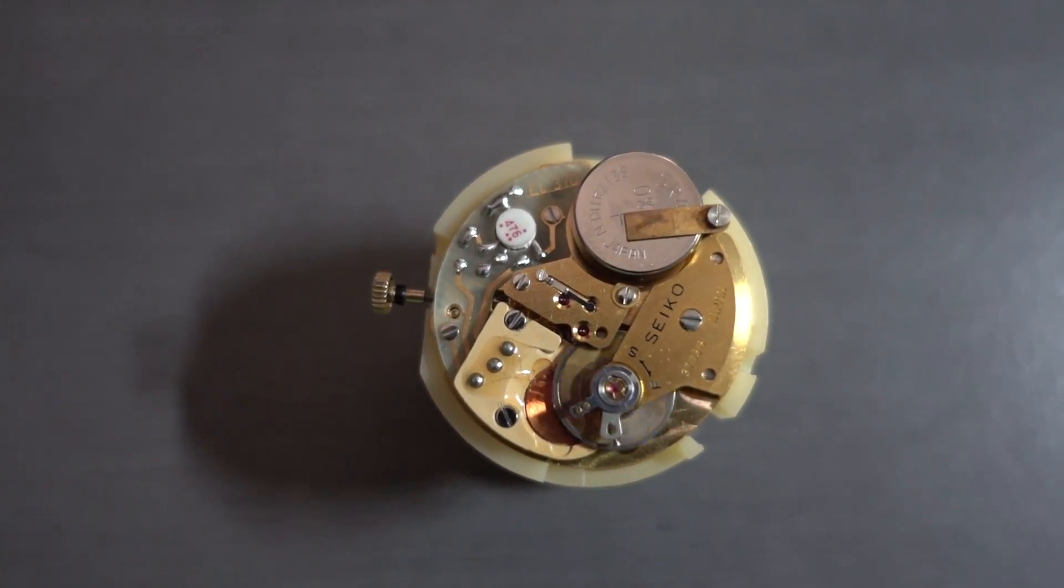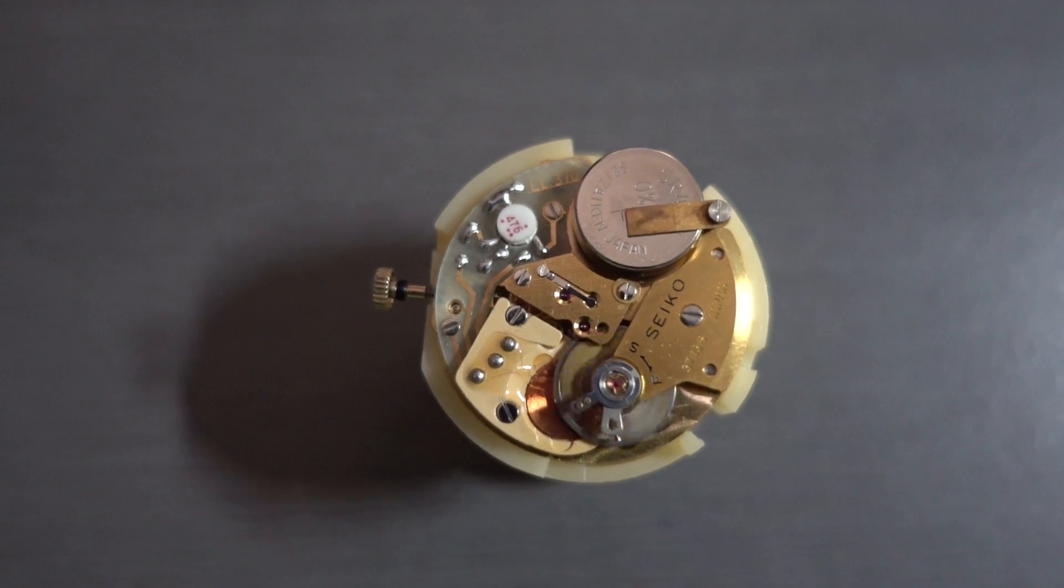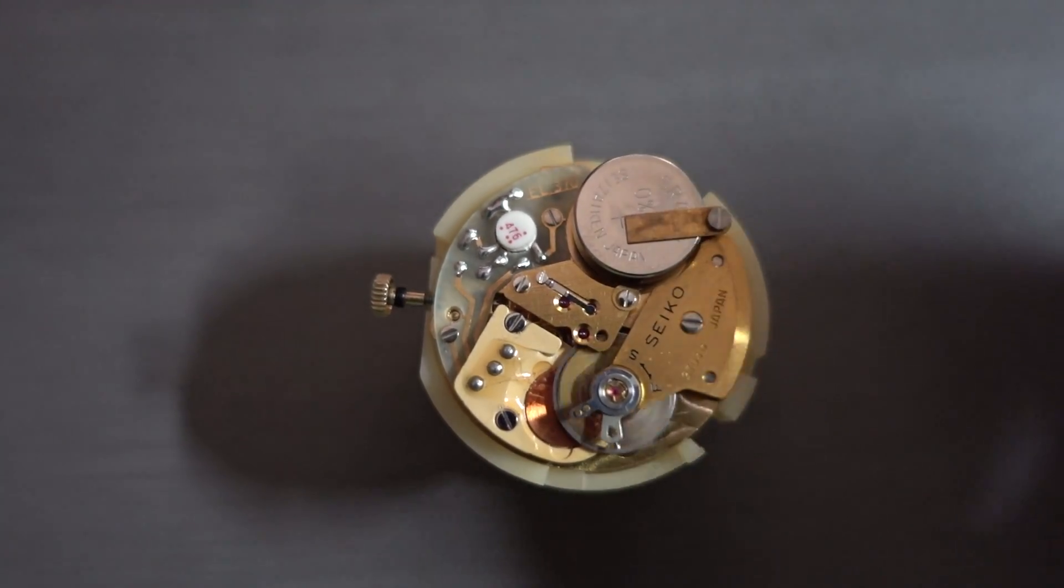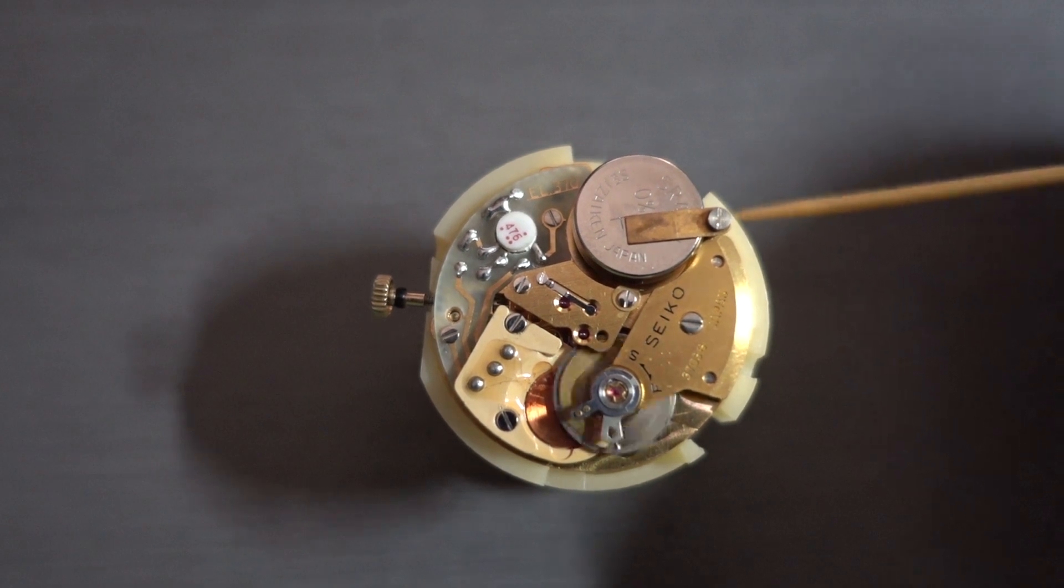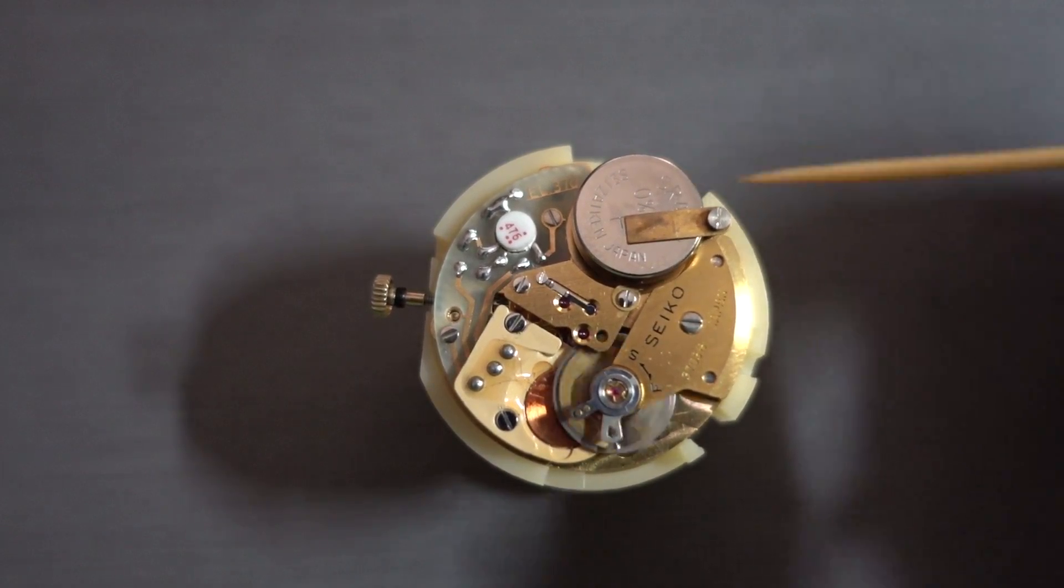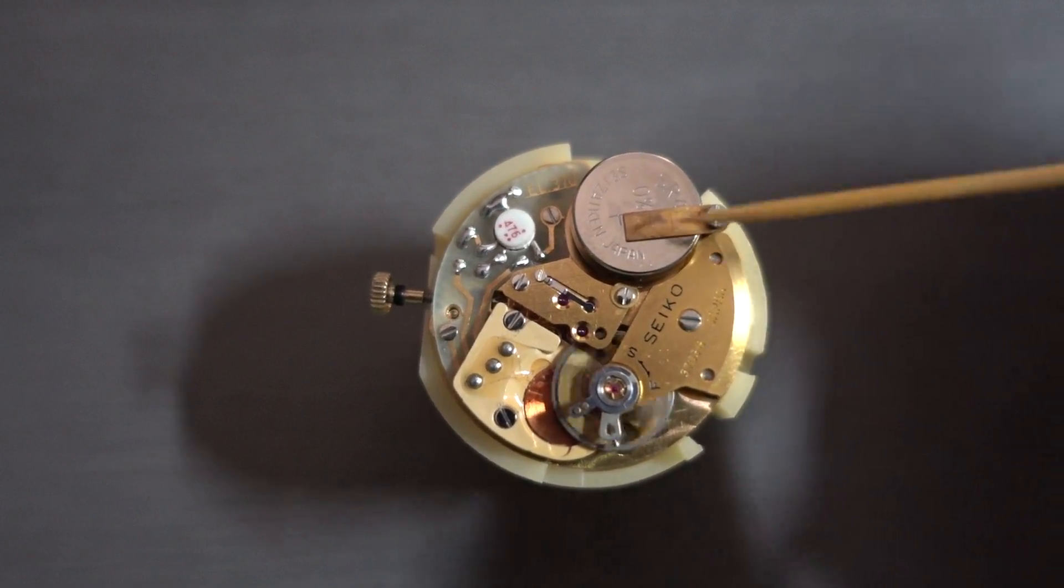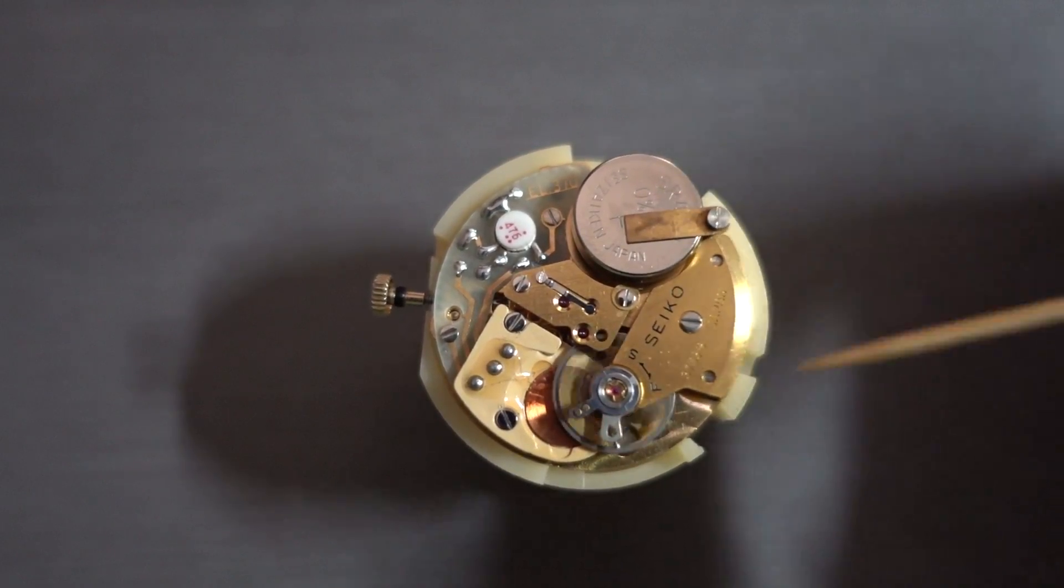It really is a conquest of 1950s electronics. Just a few other points: the bracket there actually doesn't come on the movement. That's one of Seiko's original service parts for doing testing on these, and that just keeps the battery in while you're working on it.